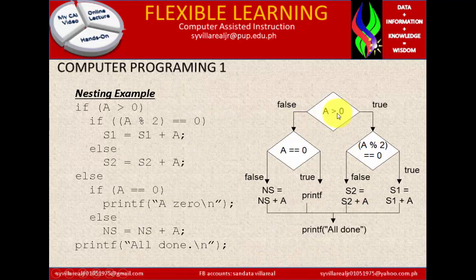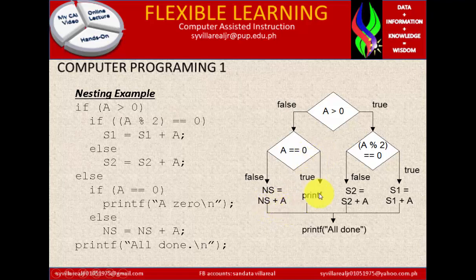Nesting example: if a is greater than 0 — if true, then a divided by 2. If false, a is exactly equal to 0. If false, ns equals ns plus a. If true, printf — display on screen. Right here, if true, it will go to s1 equals s1 plus a. If false, then s2 equals s2 plus a.